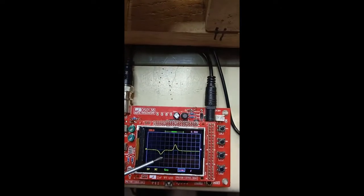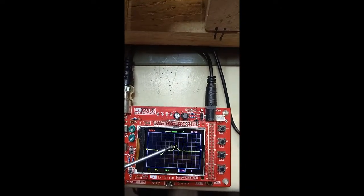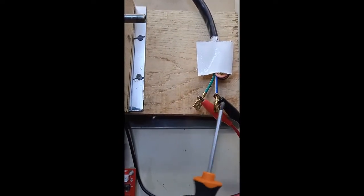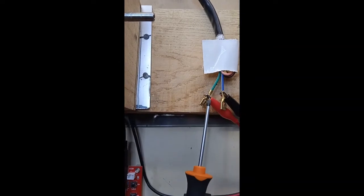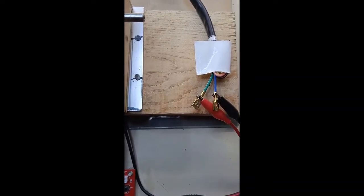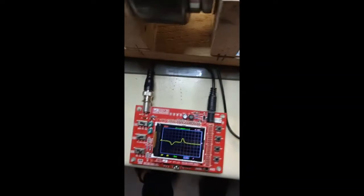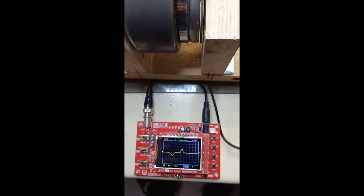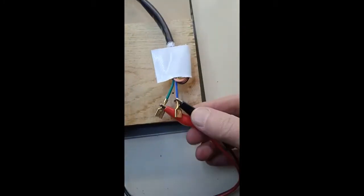In this case, we have a negative pulse first, then a positive pulse, because we have the ground on the blue wire and the hot line on the green wire. If I reverse the two wires...